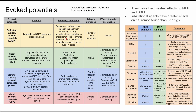The pathway continues through the lateral lemniscus, the inferior colliculus in the midbrain, to the medial geniculate body, and the auditory cortex. So all of these structures are monitored with a brainstem auditory evoked potential. The relevant surgeries here are posterior fossa surgeries, where this nerve pathway can be damaged. The effect of inhaled anesthetics on auditory potentials is minimal.